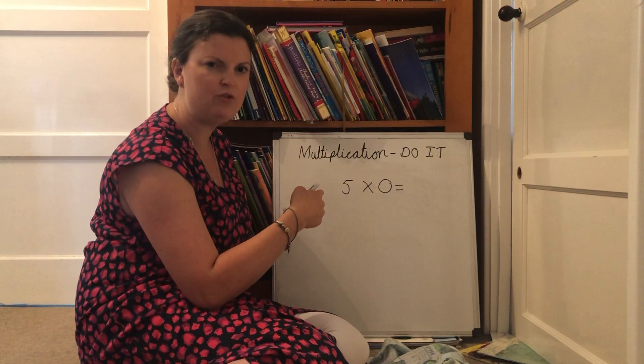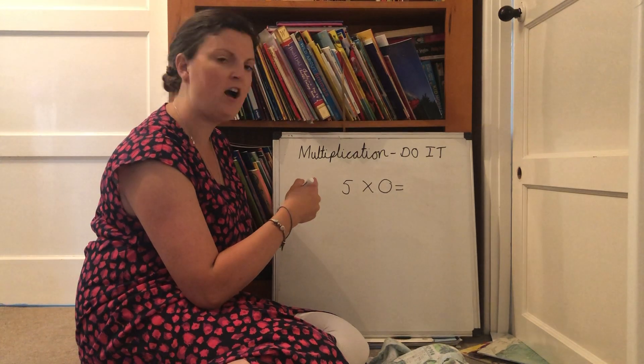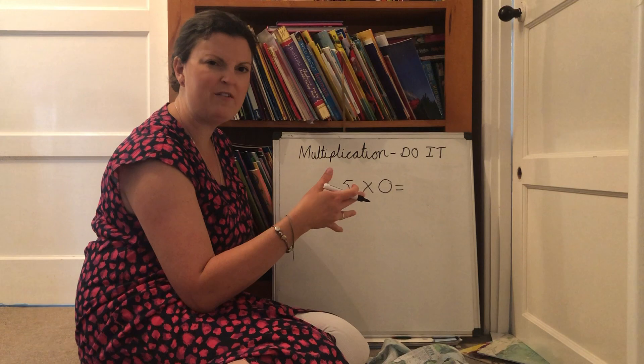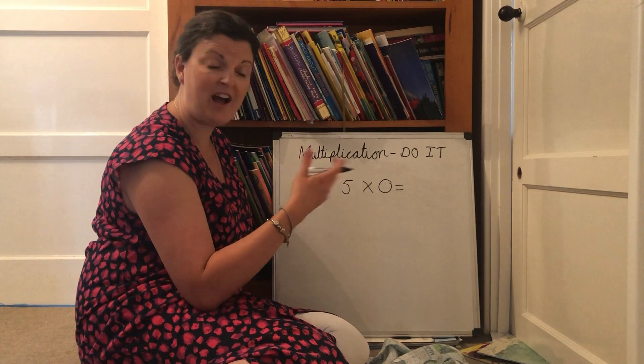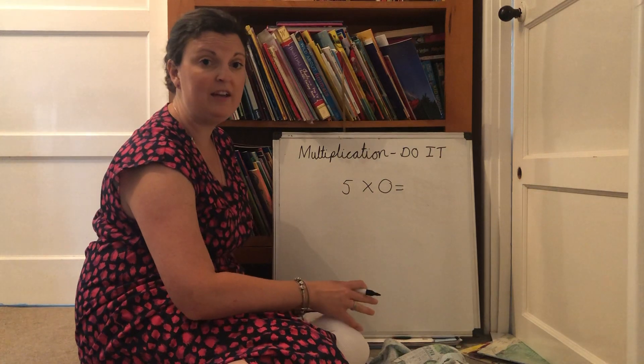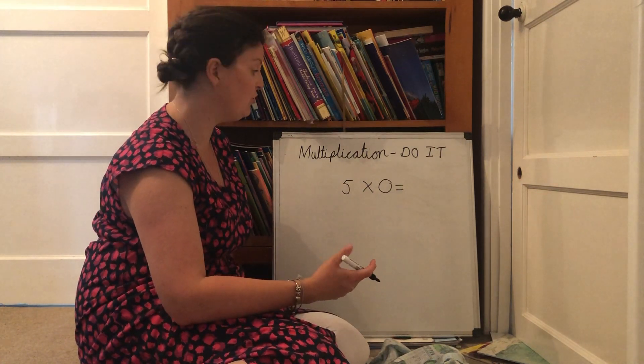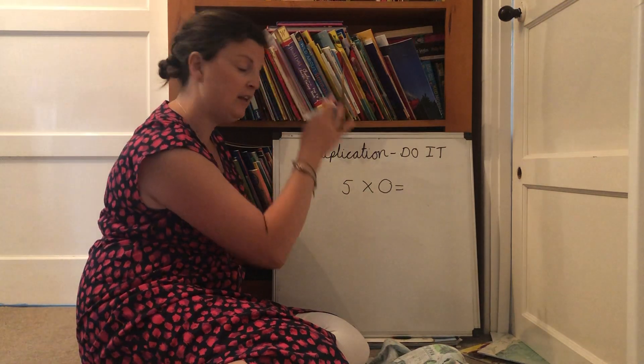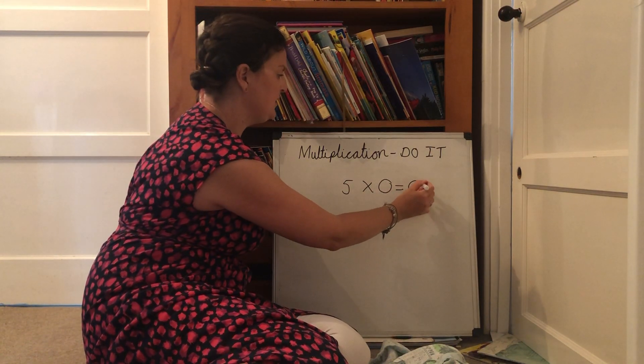What do I need to draw? If I have five zero times, how many fives do I have? I have zero. So actually, I don't need to draw an array because I wouldn't have anything to draw. So the answer, whenever you times a number by zero, the answer is always zero.